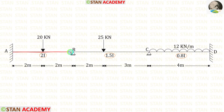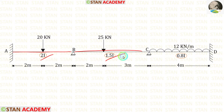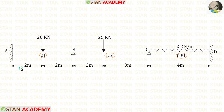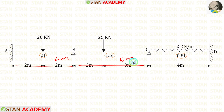In span AB, the moment of inertia is 2I. In span BC, it is 1.5I, and for span CD, it is 0.8I. The length of span AB is 4 meters, the length of span BC is 5 meters, and the length of span CD is 4 meters.